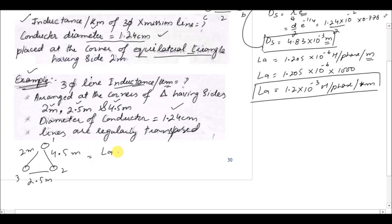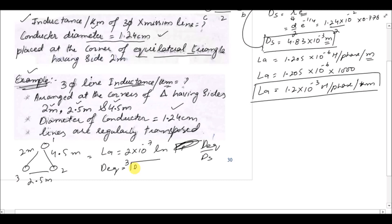We use the inductance formula L = 10⁻⁷ × ln(D_eq / Ds), where D_eq = (D₁₂ × D₂₃ × D₃₁)^(1/3). For Ds, since the conductor diameter is the same, Ds remains equal to 4.83 × 10⁻³ meters.